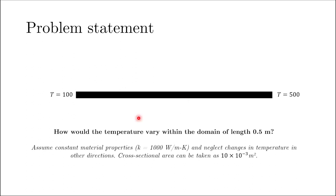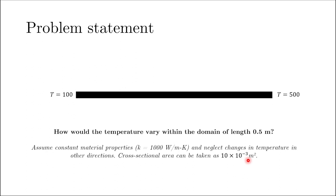We assume constant material properties — the thermal conductivity of this rod is 1000 W/(m·K). We neglect temperature changes in other directions, so it's a purely one-dimensional problem. The cross-sectional area through which the heat flux passes is 10×10⁻³ m². To solve this we need the governing equation, and because it's a 1D pure conduction problem, we can write Fourier's law of heat diffusion in differential form.